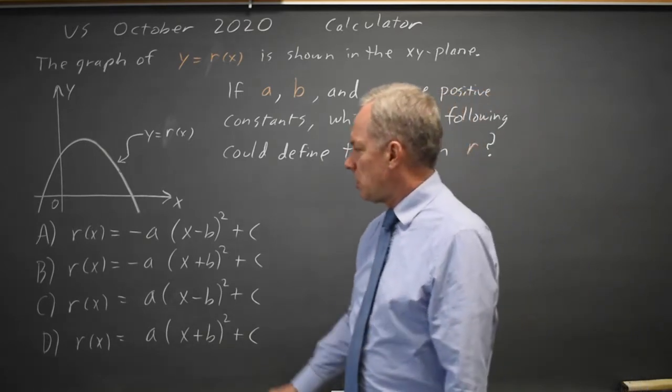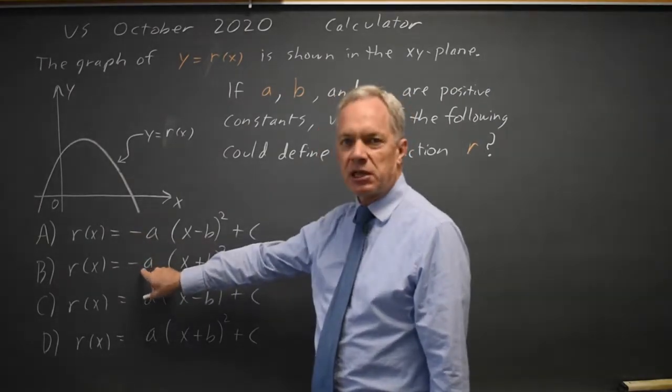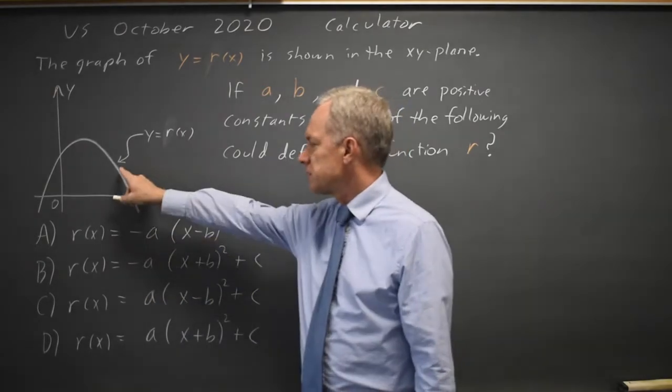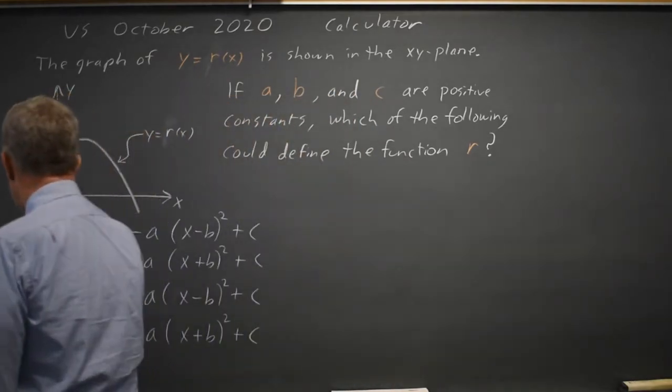And your knowledge of quadratics should tell you if a is positive, negative a will be negative, which means the quadratic opens down as this graph does. If a is positive, these two will open up, so choices c and e are not correct.